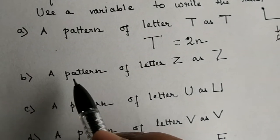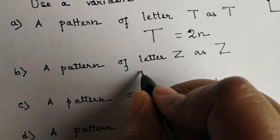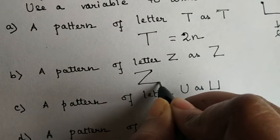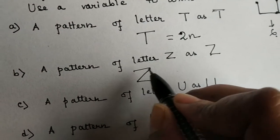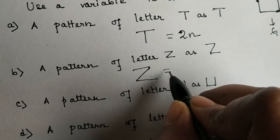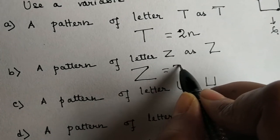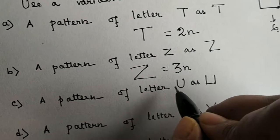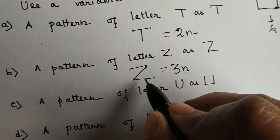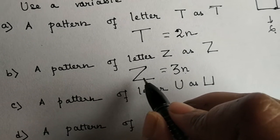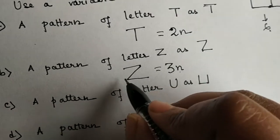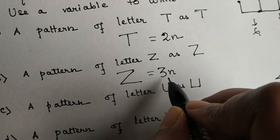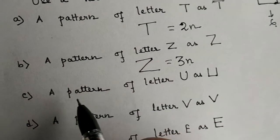Coming to the next part — a pattern of the letter Z. In the letter Z, 3 mastics are used in one alphabet. So the rule will be 3n, where n is the number of Z's. If we need to find the number of mastics in 15 Z's, then it will be 3 into 15, which is 45.